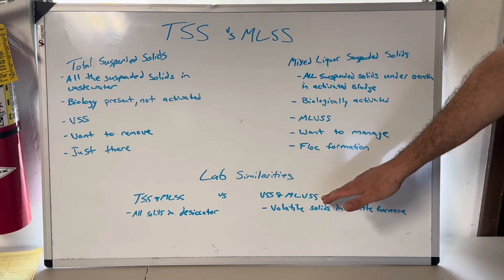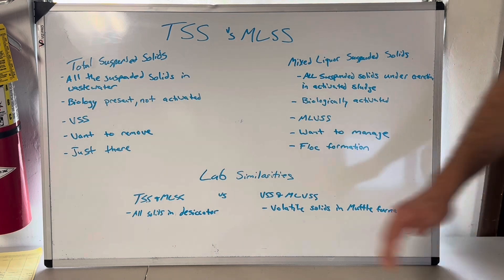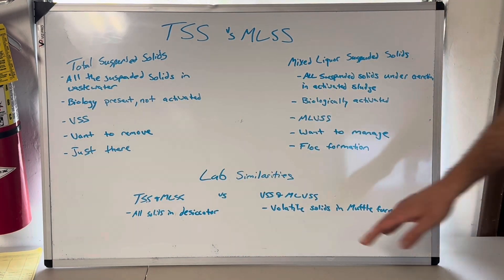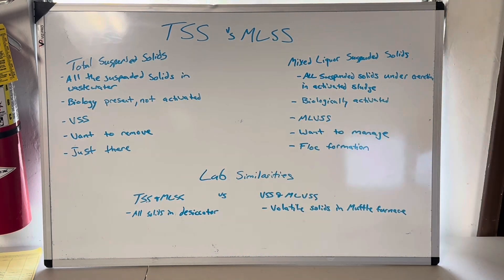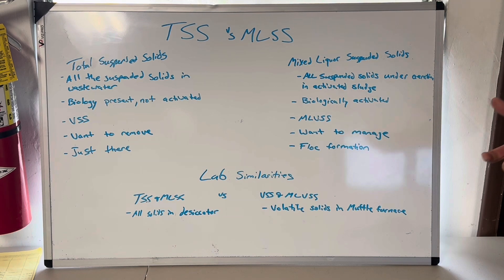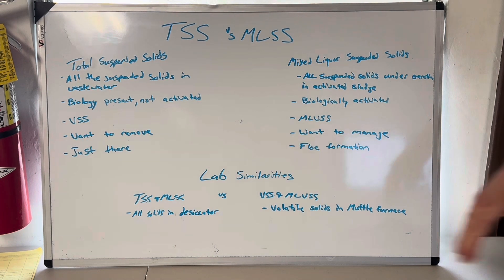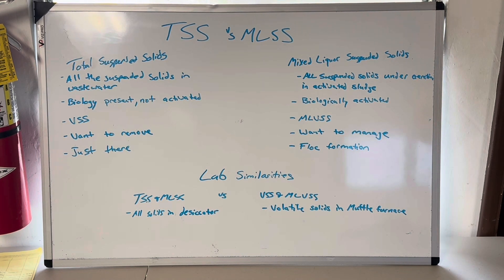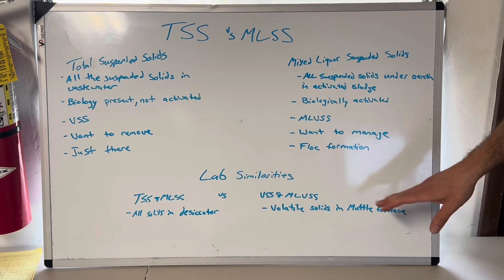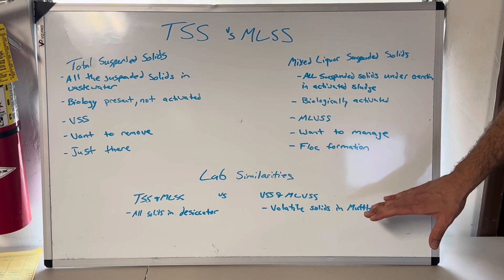For VSS and MLVSS — when I do my MLVSS, I write VSS on my chain of custody. It's all those same steps for the TSS, but we do one more thing: we take the dried sample and put it in a muffle furnace at 550 degrees Celsius and light it up. We burn everything that's organic and volatile. Then we weigh it at the end of the burning — that tells us what our volatile solids are. The only thing left is inert matter that would not have burned. Make sure those temperatures are in Celsius — the desiccator is 104°C and the muffle furnace is 550°C. They might ask Fahrenheit or Celsius on your exam, so just know these are in Celsius.